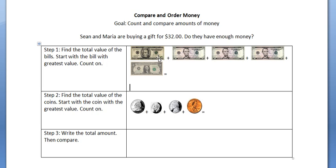Sean and Maria have a $20 bill, which gives us $20 to start. We add the $5 bill, which gives us $25. A second $5 bill gives us $30. A third $5 bill gives us $35. And a $1 bill puts our total at $36.